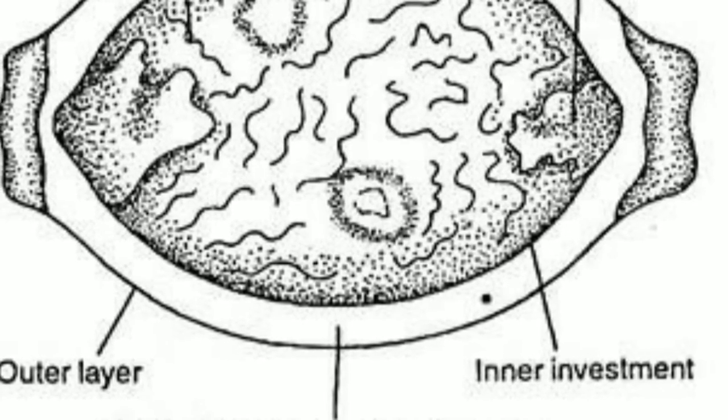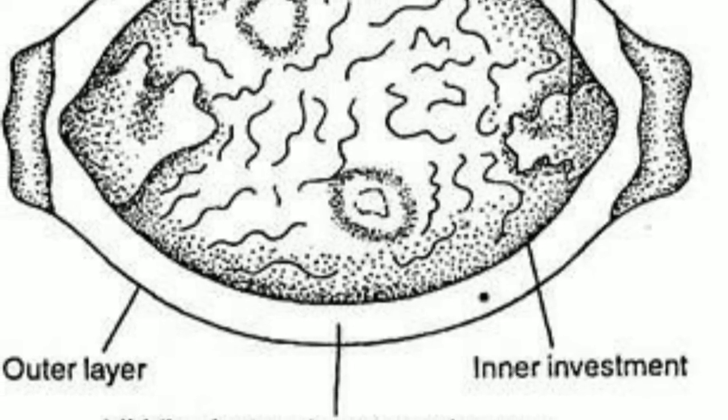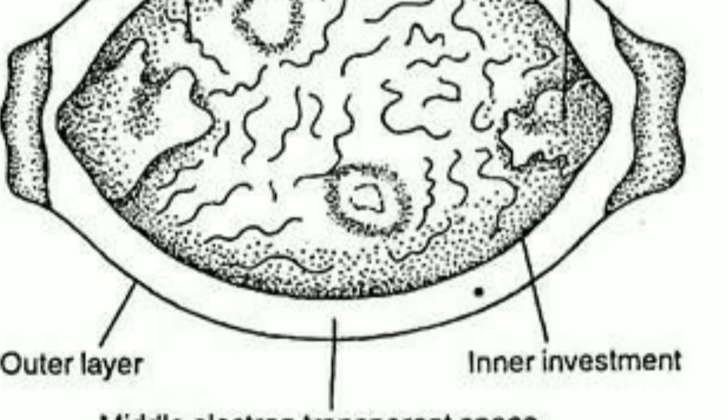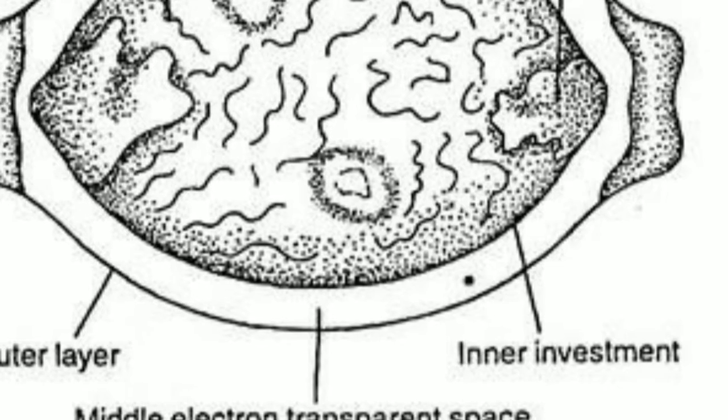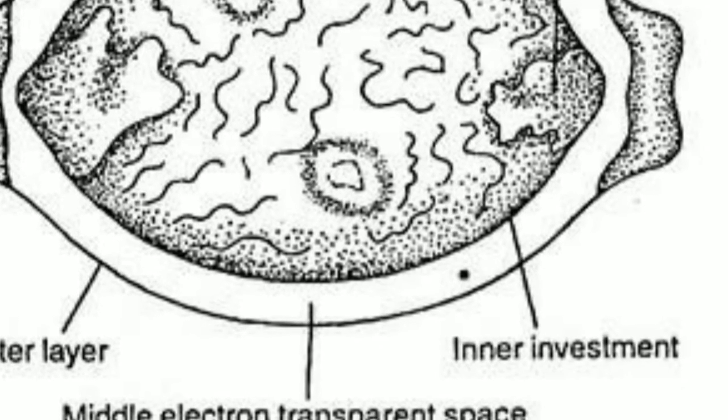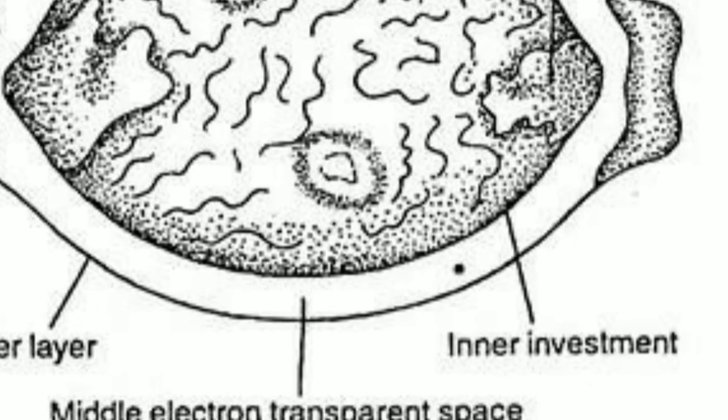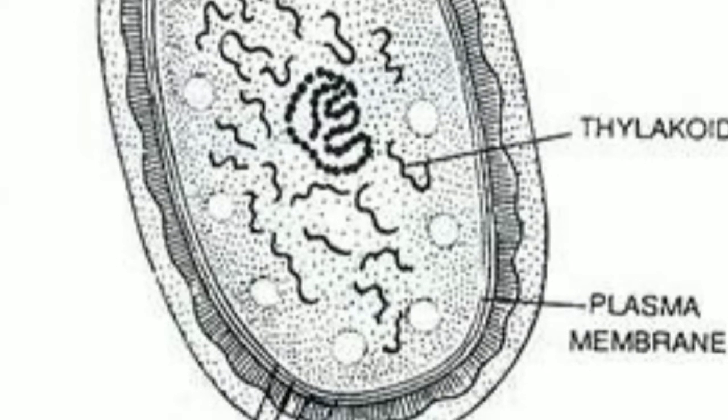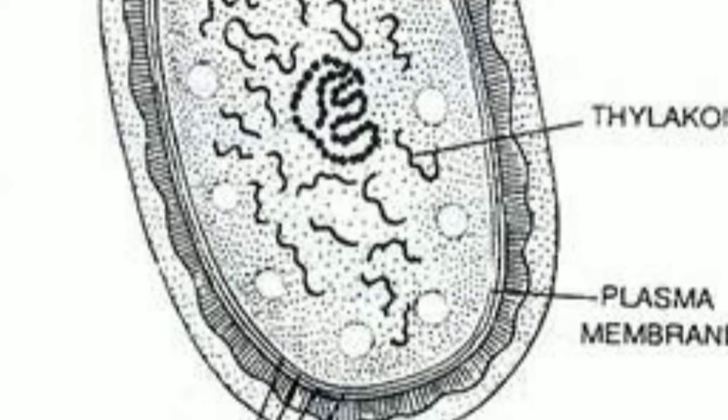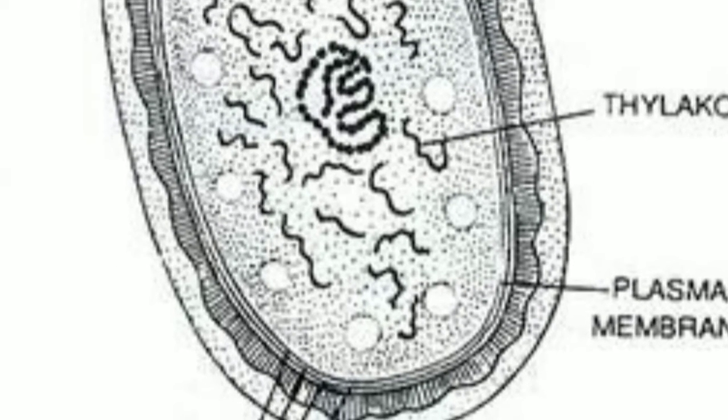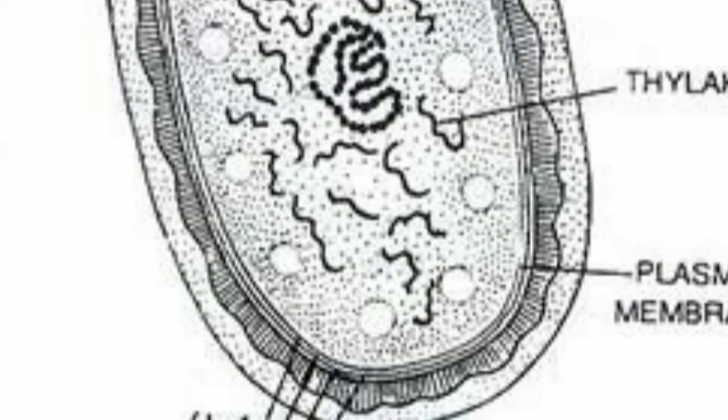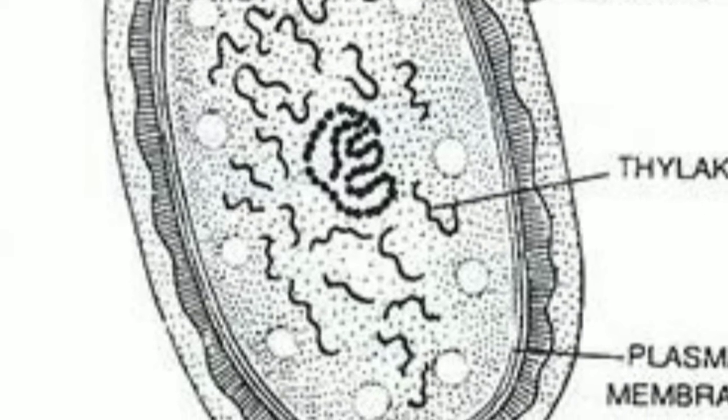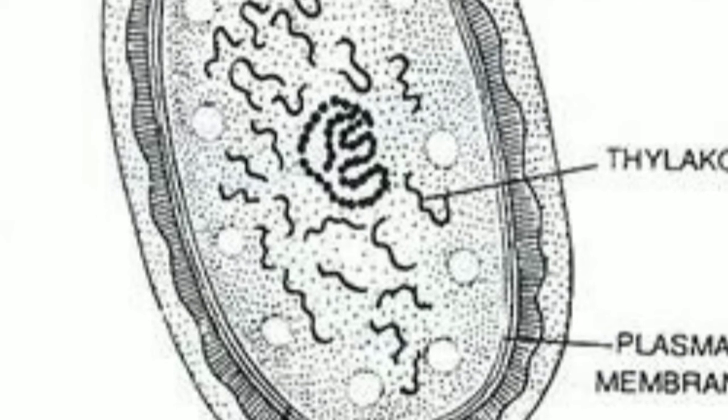Gas vesicles are small tubular structures composed of protein ribs or spirals exclusively. These contain gas which have rigid walls but are collapsed when pressure is applied. They are airtight and also provide buoyancy to the cyanobacteria.